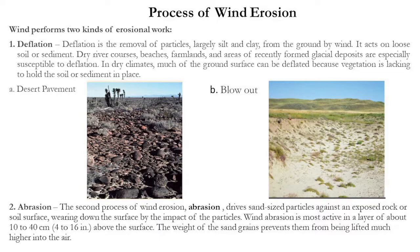Deflation causes two types of landscape: one is called desert pavement and the other is called blowout. Wind erosion is most actively found in arid regions — regions where rainfall is very low and for most of the year the area remains dry, receiving very little rainfall. When the area is dry, there is no moisture to bind the soil particles, so they are basically loose.